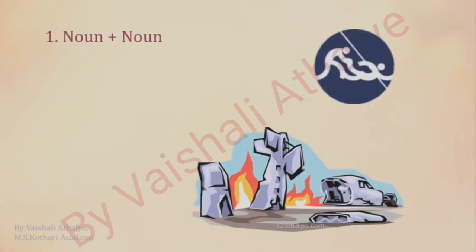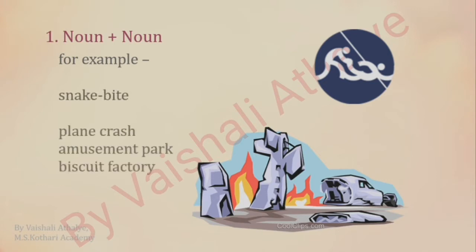Compound words can be formed by putting two nouns together. For example: snake bite, plane crash, amusement park, biscuit factory, sportsman, batsman.